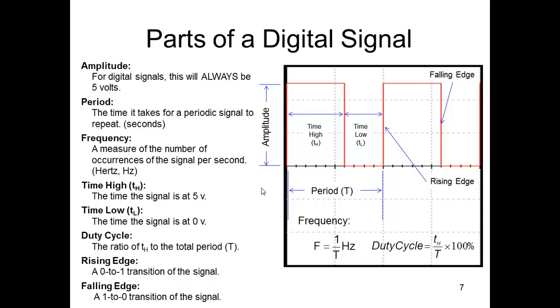Alright, okay, so let's talk about the parts of a digital signal. The amplitude for digital signals would always be five volts. It's always zero to five.